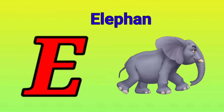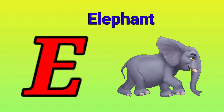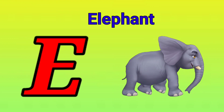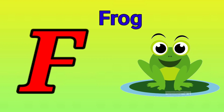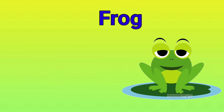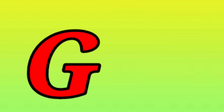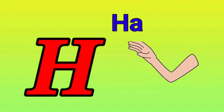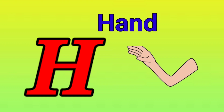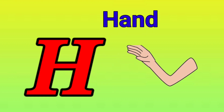E is for elephant, e-e-elephant. F is for frog, f-f-frog. G is for goat, g-g-goat. H is for hand, h-h-hand.